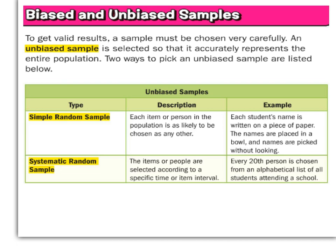An unbiased sample is just where everything is at random. If you see the word random, chances are it's unbiased. It means that we're not looking for anyone specifically — we're just going to find some people and survey them, or have them test out a product. We don't care what they answer or how they answer.